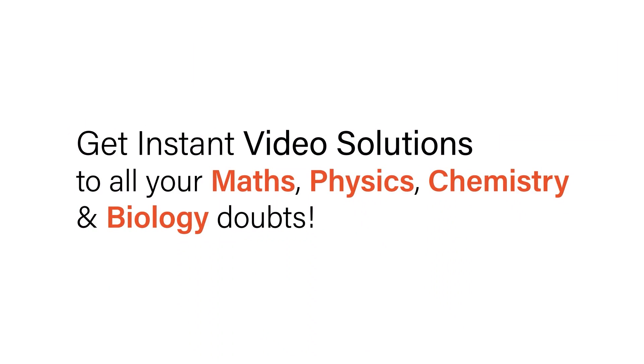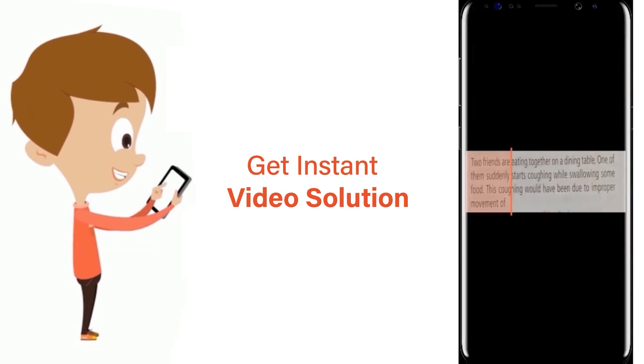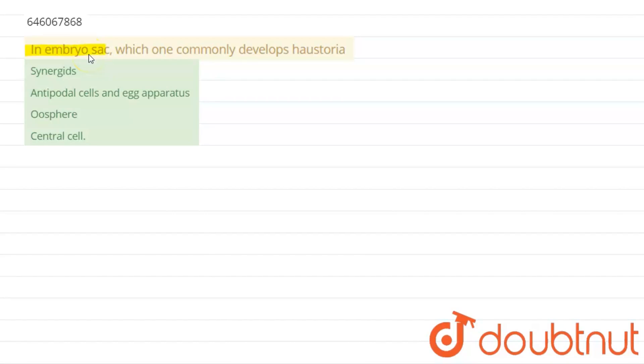With Doubtnet, get instant video solutions to all your math, physics, chemistry, and biology doubts. Just click the image of the question, crop the question, and get instant video solution. Download Doubtnet app today. The question is: In embryo sac, which one commonly develops haustoria?